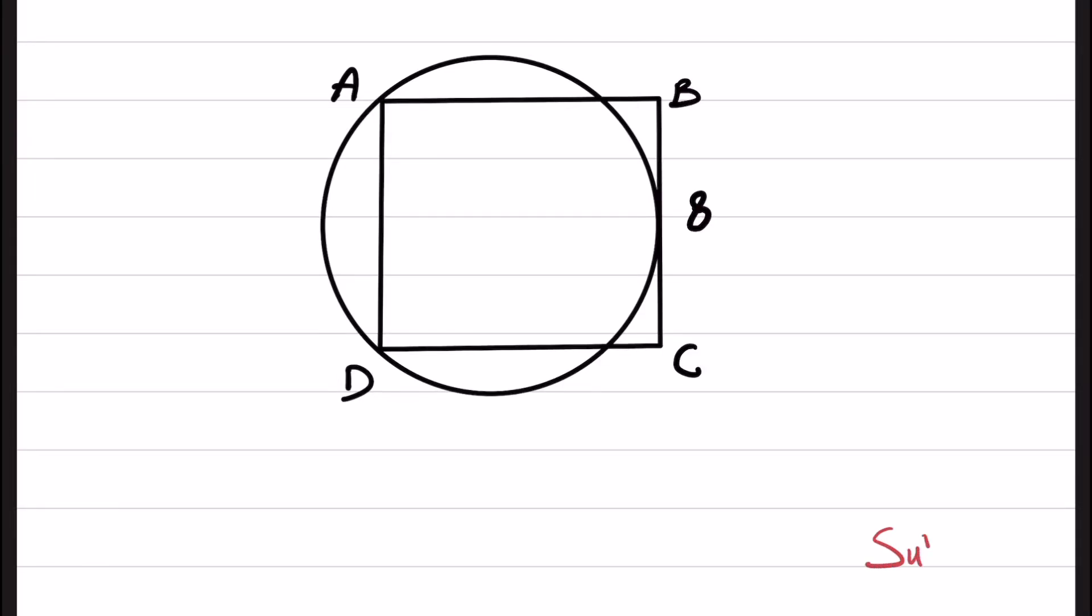Welcome to a new episode of Mathartic. In this question, square ABCD is given, and the length of BC is given as 8, and BC is tangent to this given circle. The question asks to find the radius of this circle.